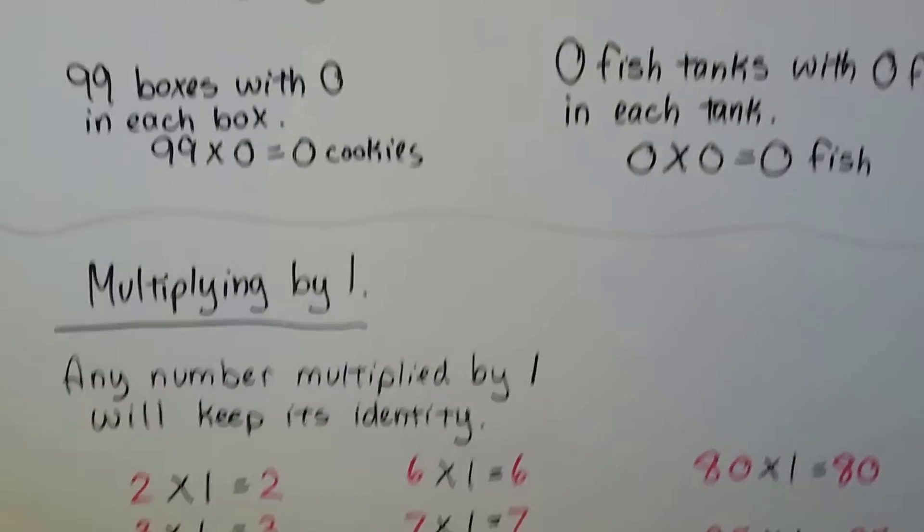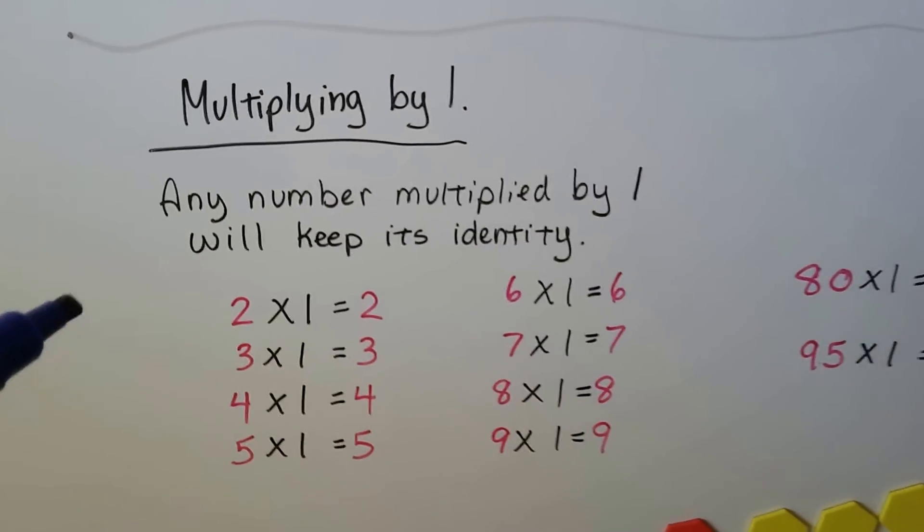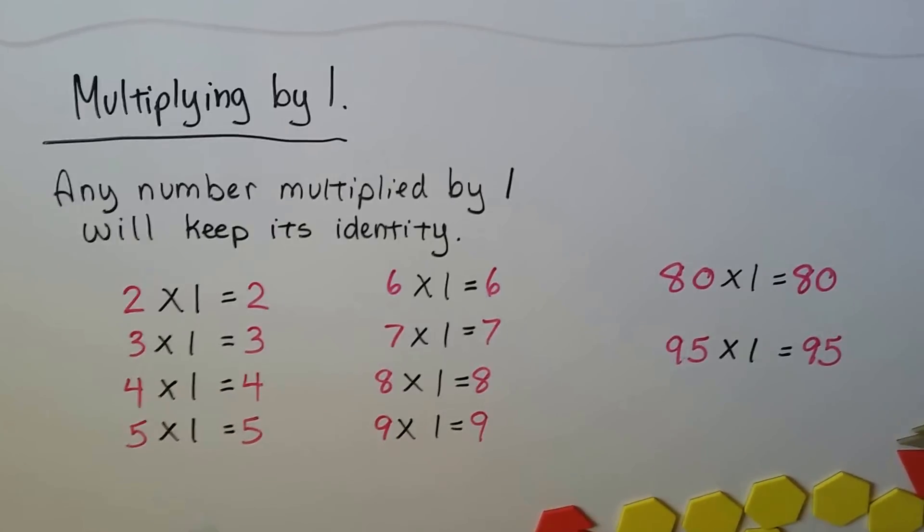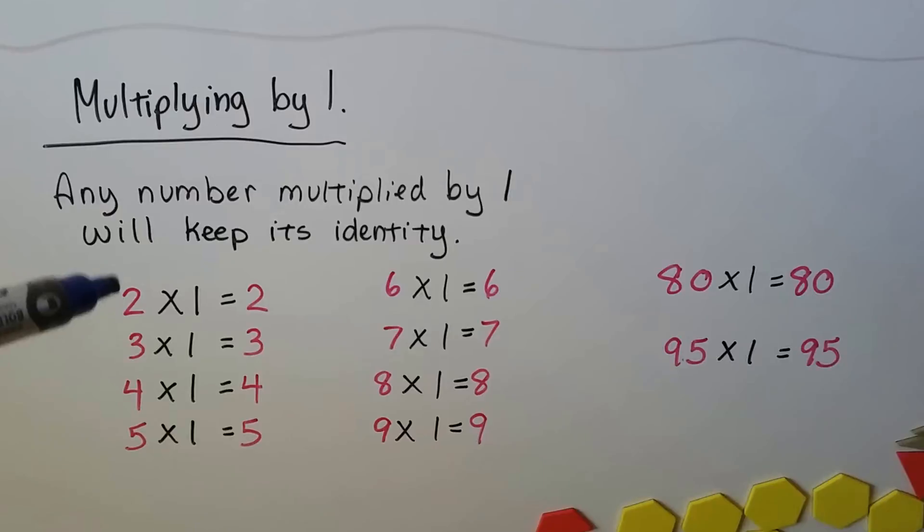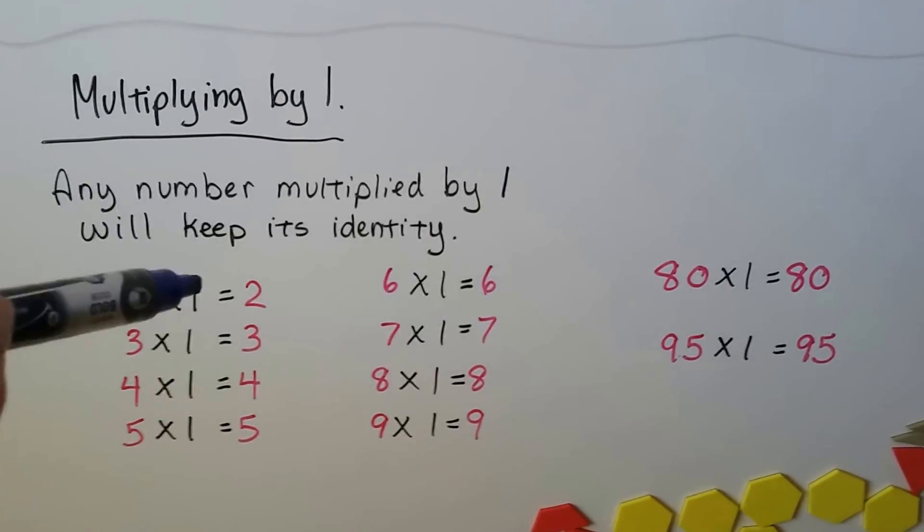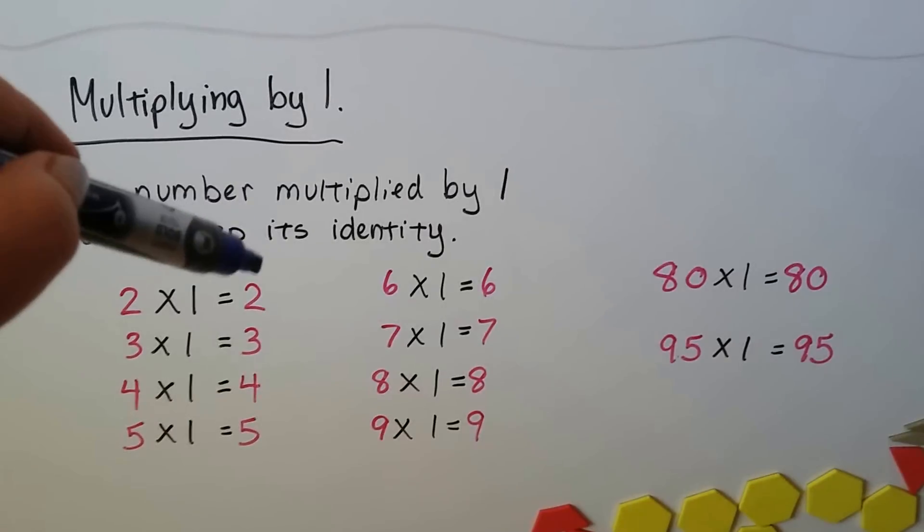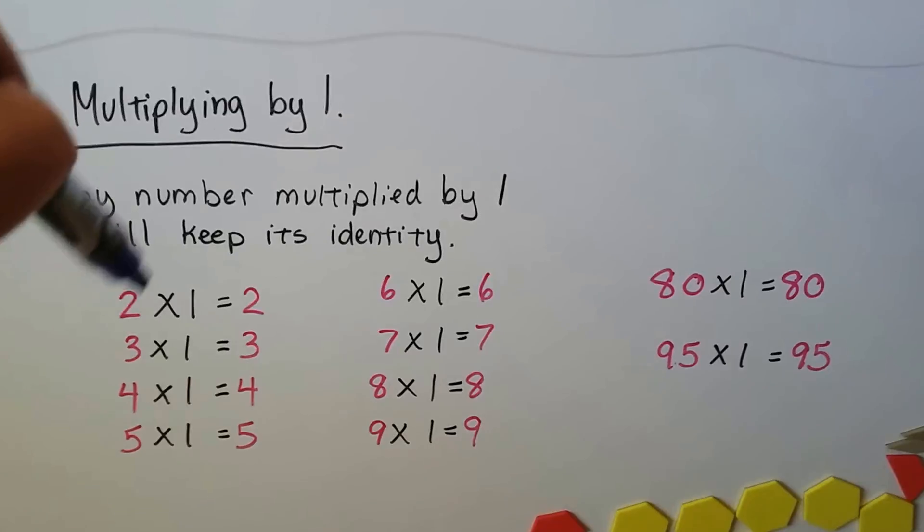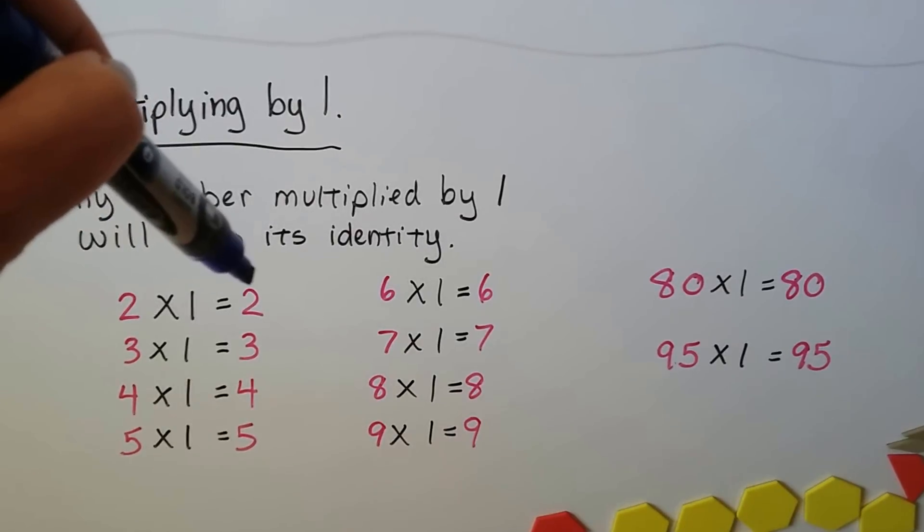Now, on the other hand, when we're multiplying by 1, any number multiplied by 1 is going to keep its identity. The identity of this number is a 2, isn't it? He's a 2. If we multiply him by 1, he's going to stay a 2. He's going to keep his identity. He's not going to get a new name. He's not going to change to a different number. He's going to stay the same and keep his identity.